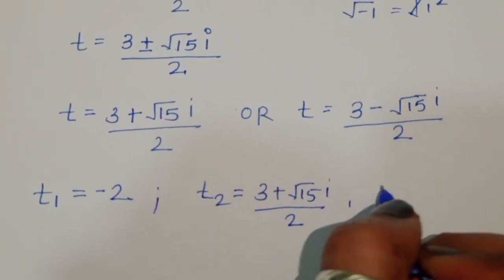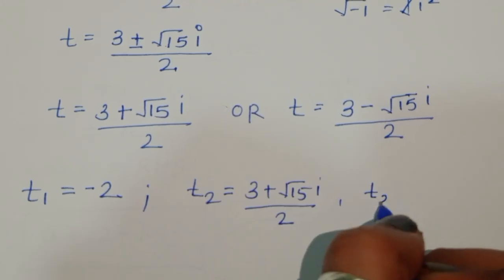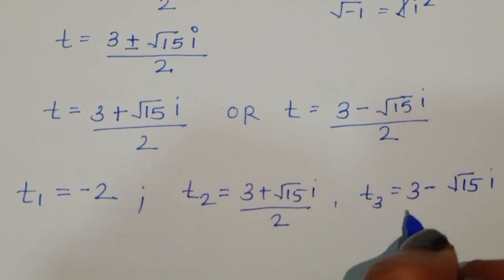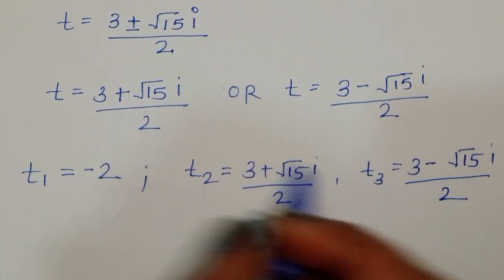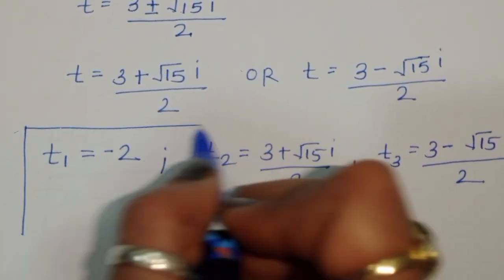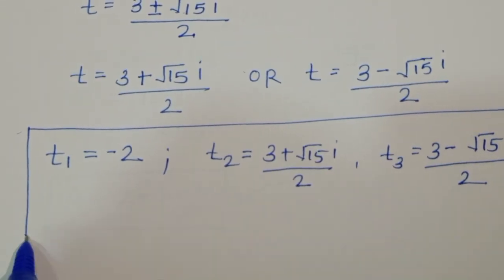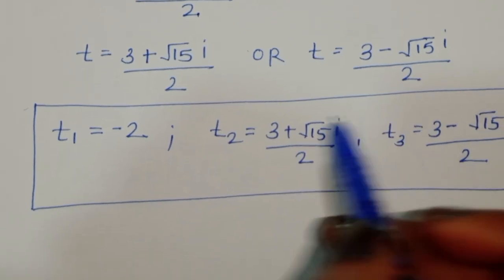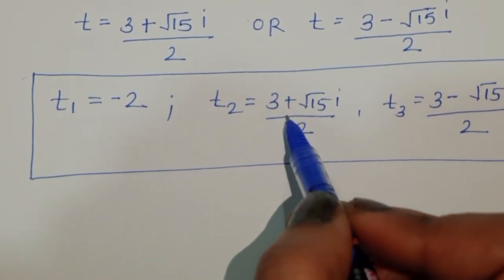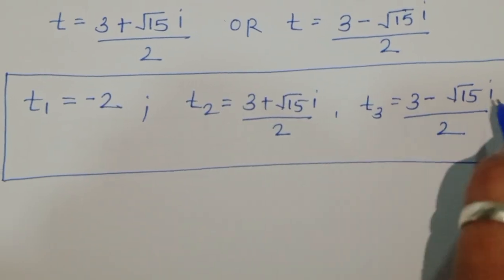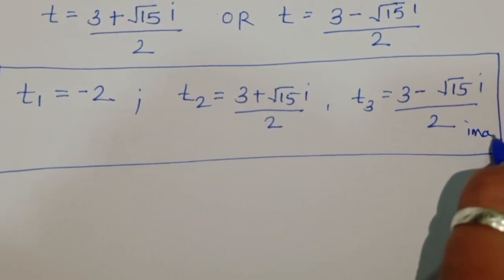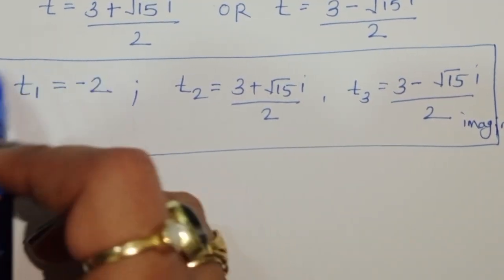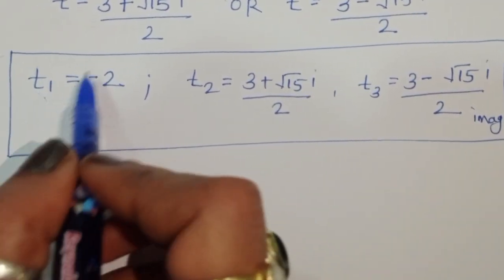So we have found three values of t. t2 and t3 are imaginary solutions, since they involve i.